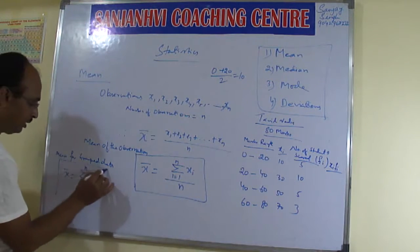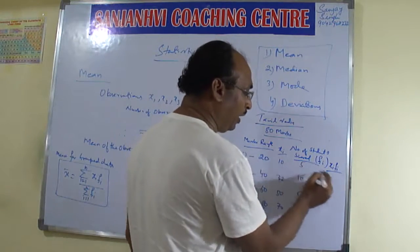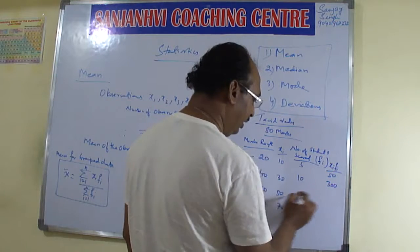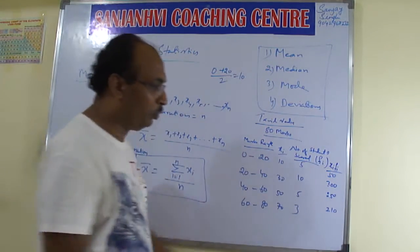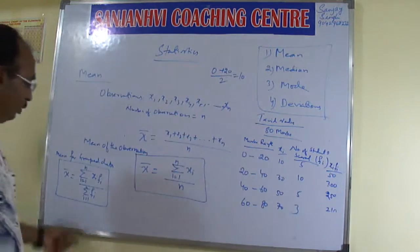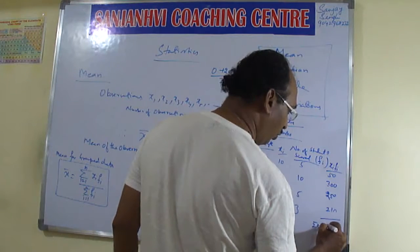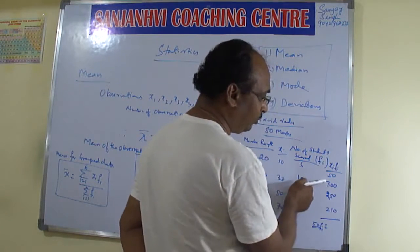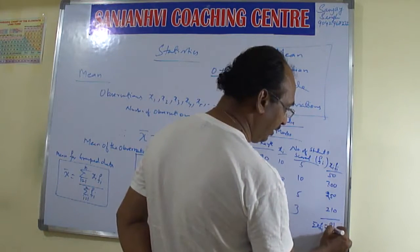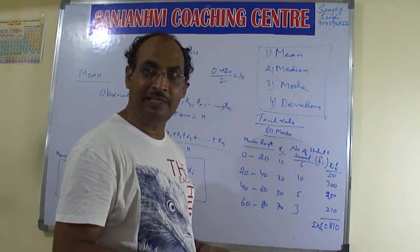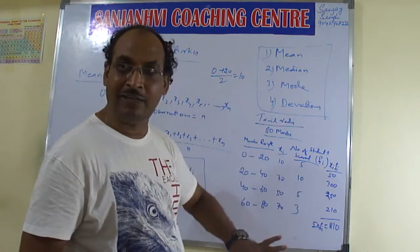In this, what we need to find is XiFi — multiplication of these two. So 10 into 5 = 50. Then 30 into 10 = 300. Then 50 into 5 = 250. Then 70 into 3 = 210. Adding all of them together, we are getting 810.